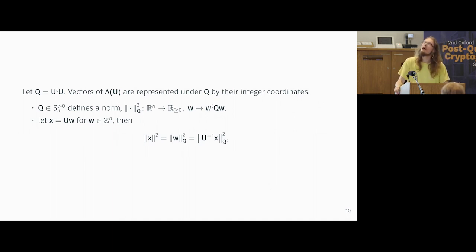So how do we sign? Something that's often said about this gram matrix formulation is that it sort of keeps the geometry of the lattice, but forgets its embedding. And one of the things that this means is if you look at lattice vectors of this lambda U, you can represent them by their integer coordinates. Each such Q defines a norm. So usually this norm would just be W transpose W, but here you plop the Q in the middle. And if you have a lattice vector X, so this is some integer vector W times U, then the Euclidean norm of X, you do the algebra, it's just the norm of this W under Q. And it's exactly the knowledge of this unimodular U that lets us move between these two worlds.